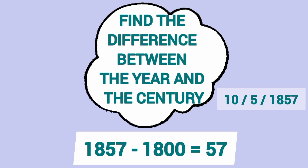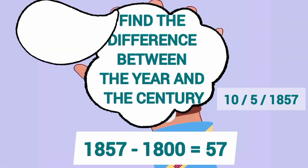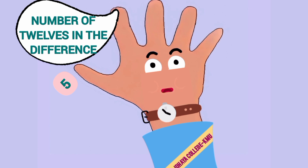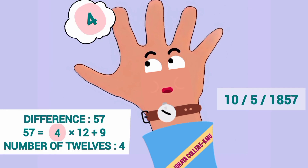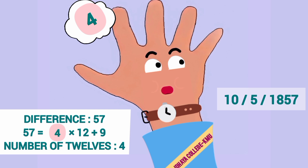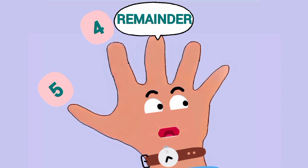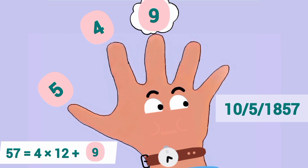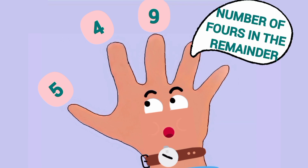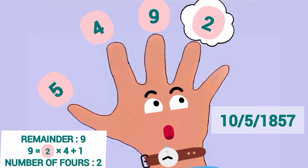Find the difference between the year and the century: 1857 minus 1800 equals 57. On your index finger, put the number of 12s in the difference: 57 equals 4 twelves plus 9, so the number of 12s is 4 — put it on your index finger. On your middle finger, put the remainder: that is 9. On your ring finger, put the number of 4s in the remainder: 9 equals 2 fours plus 1, so the number of 4s is 2.